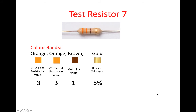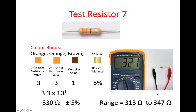Gold is plus or minus 5%. So that gives us 33 multiplied by 10 to the power of 1, which is 330 ohms, plus or minus 5%. We'd expect a resistance value within the range of 313 ohms to 347 ohms. And we've measured this one at 321 ohms.